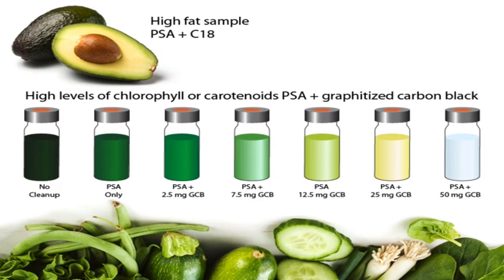For samples with high levels of chlorophyll and carotenoids, for example spinach and carrots, primary secondary amine is mixed with graphitized carbon black to reduce the colored compounds. Although the addition of graphitized carbon black helps remove pigments, it has been noted that there is a low recovery of structurally planar pesticides.